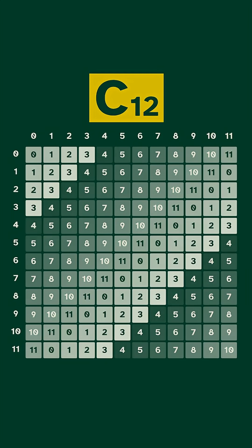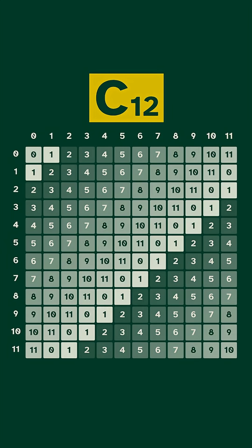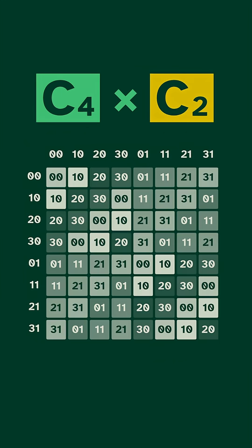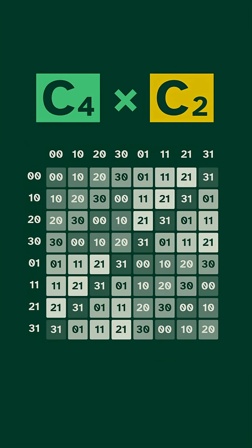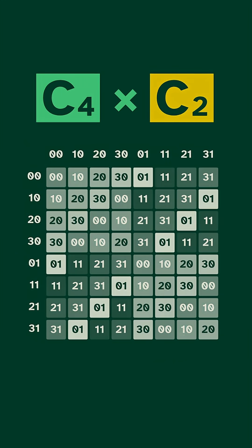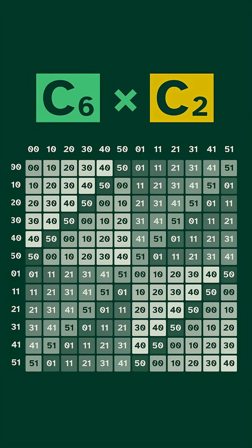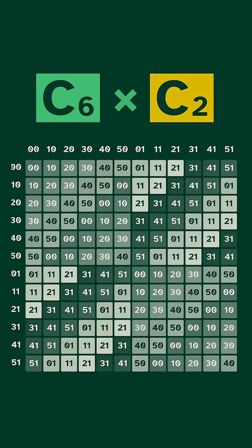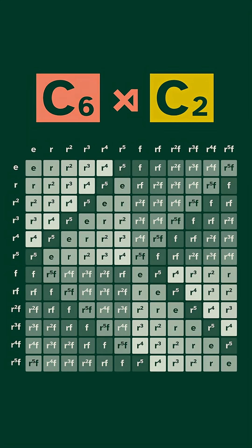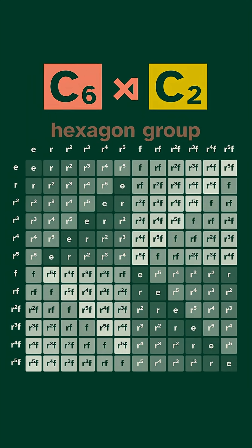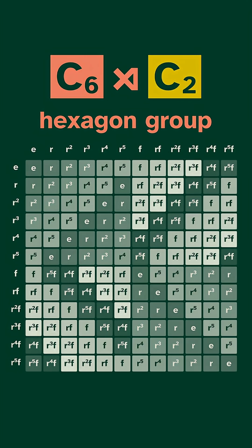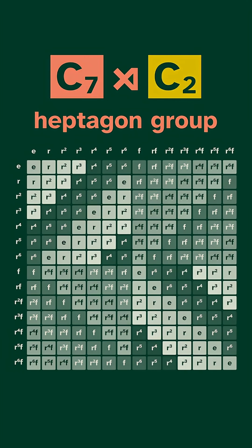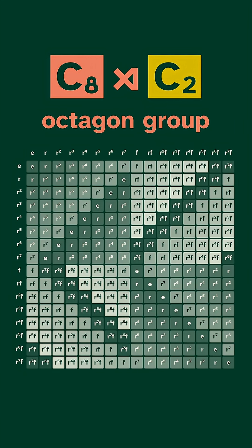To get a more complex pattern, we need a more complex group, like a product. The product of two groups has more going on, and we see a similar pattern if we change the order. But we could instead make this a semi-direct product. Now this is the hexagon group, and here's the heptagon group, and the octagon group.